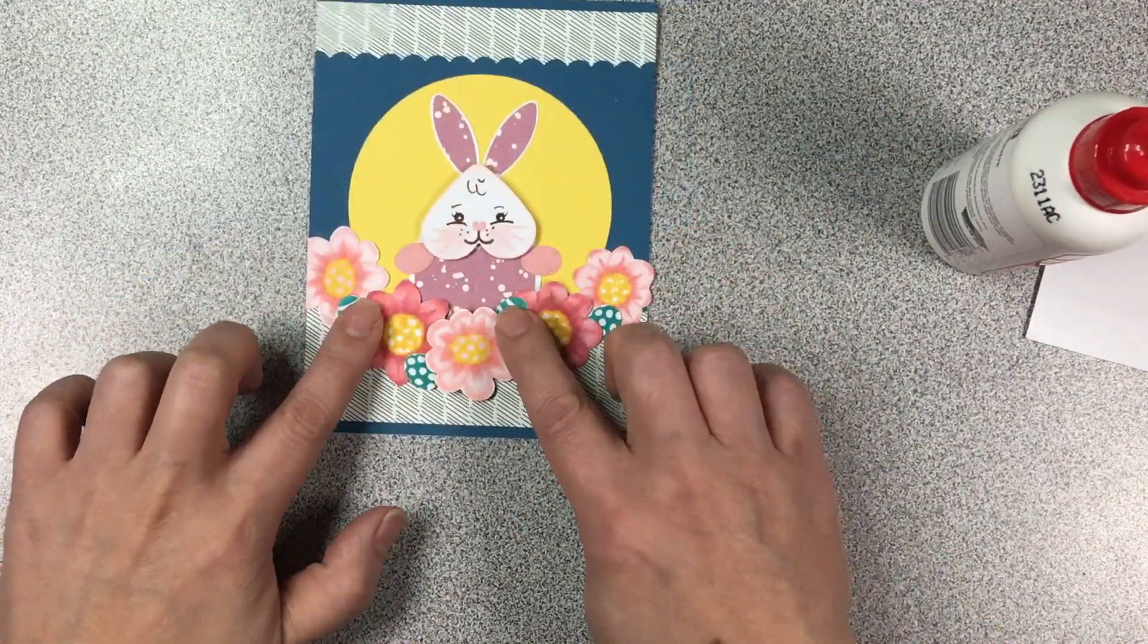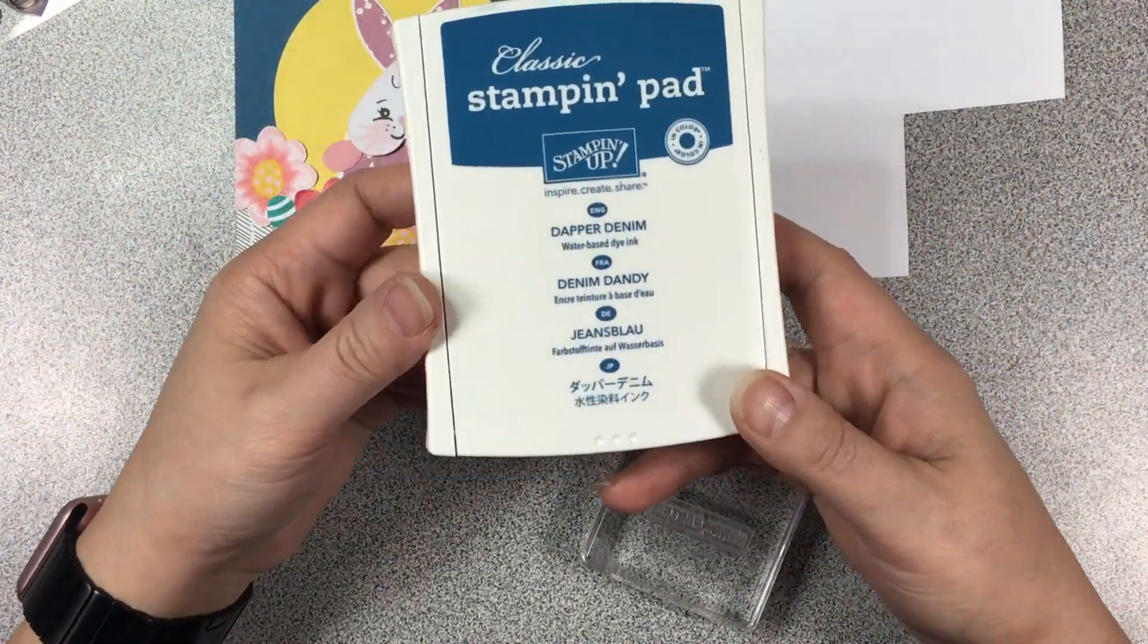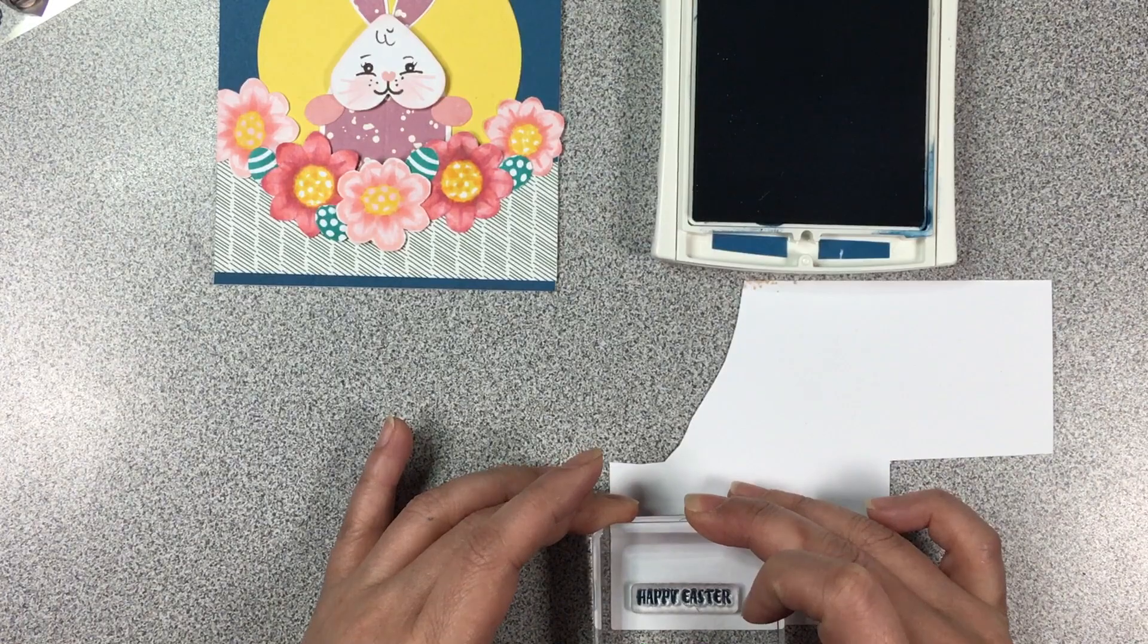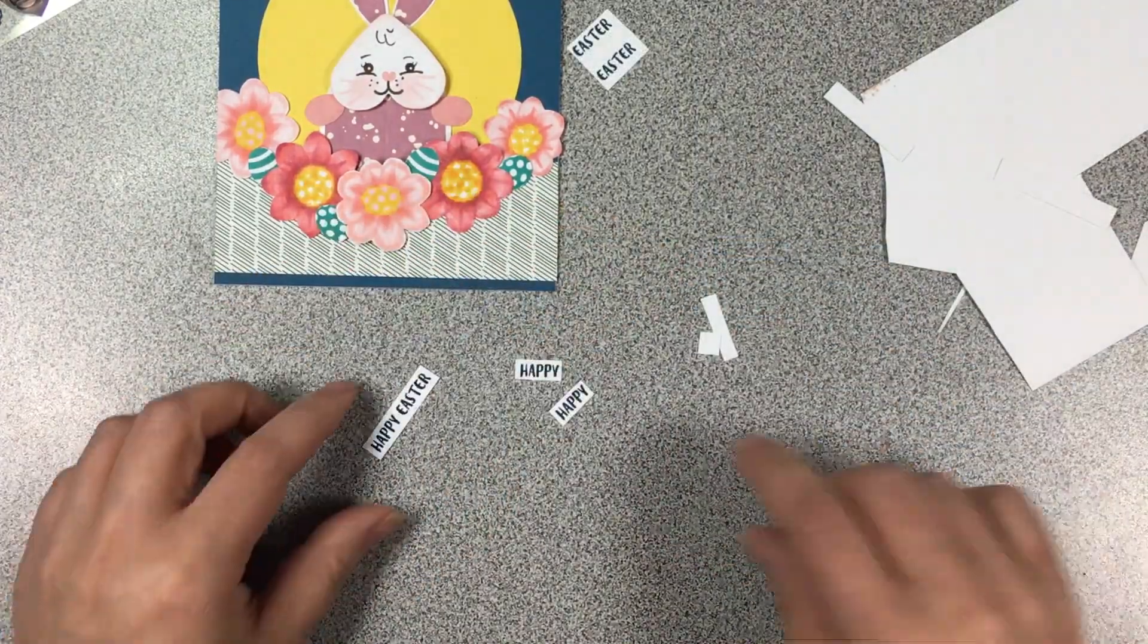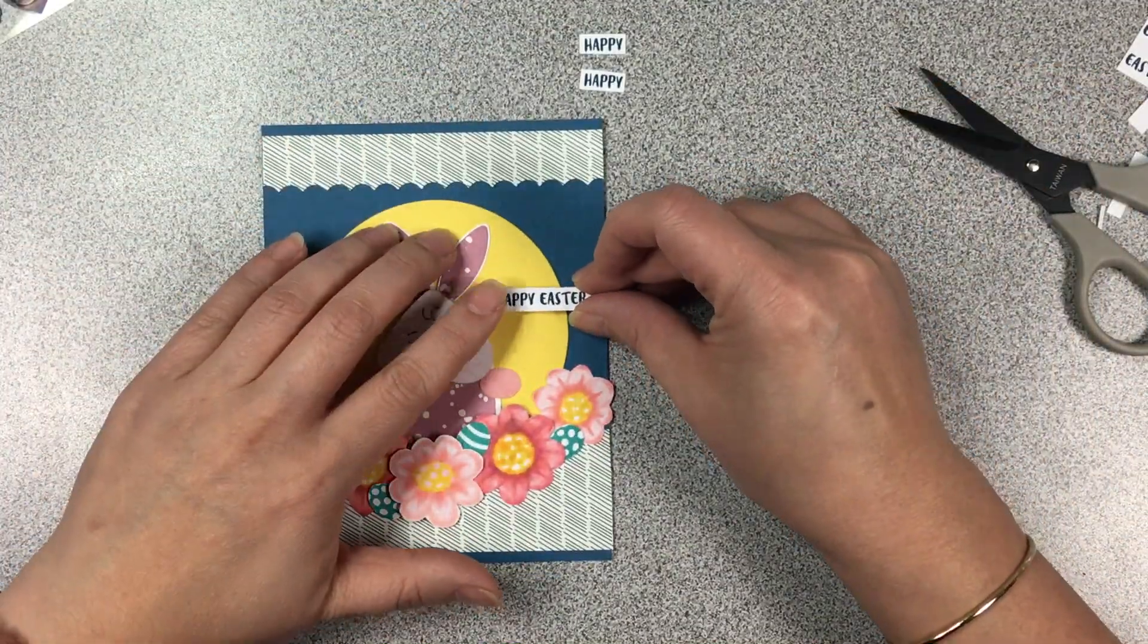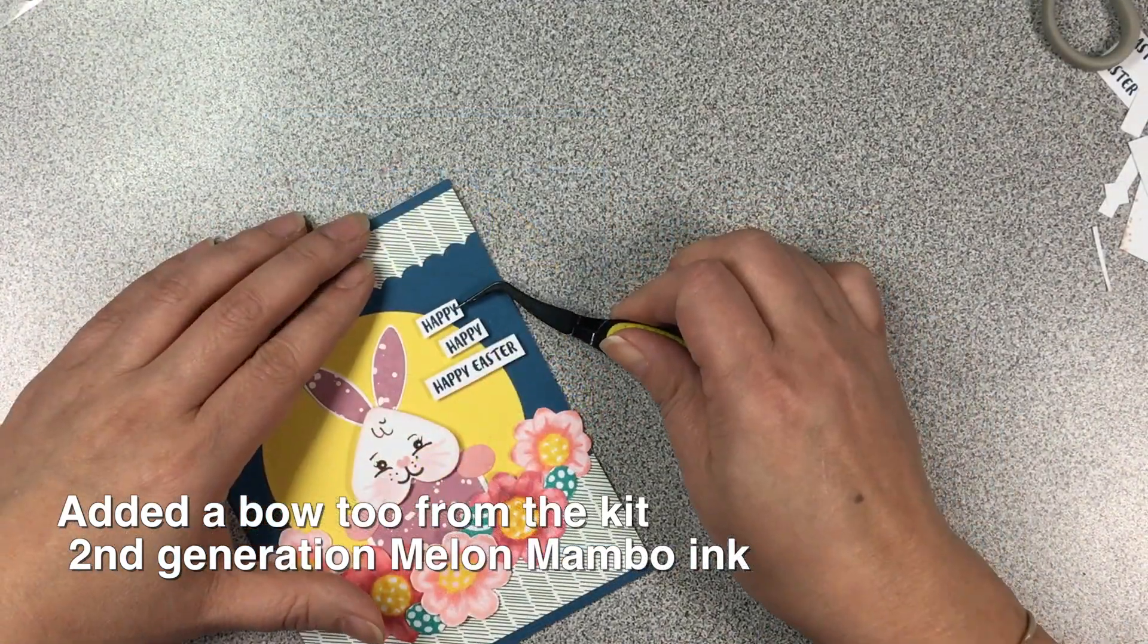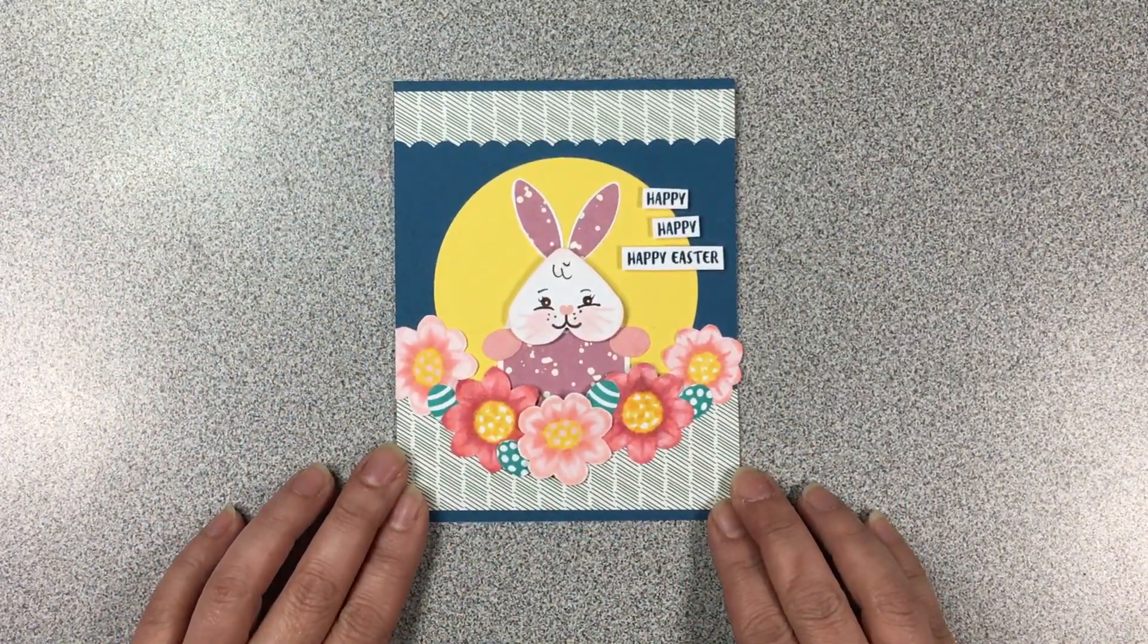And for the sentiment I'm using the Happy Easter from the kit so I'm gonna stamp it with Dapper Denim. We're gonna stamp that three times and then all I did was just hand cut them out, nothing fancy, and cut out the two happy words separately. And then we're just gonna pop them up on the side there and they don't have to be super straight. So I think that turned out to be a very fun card.